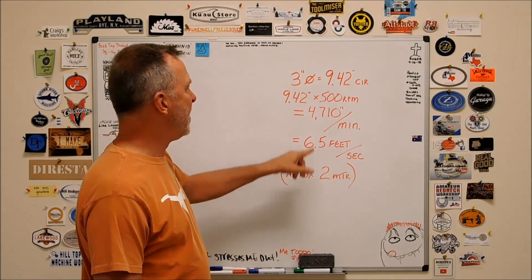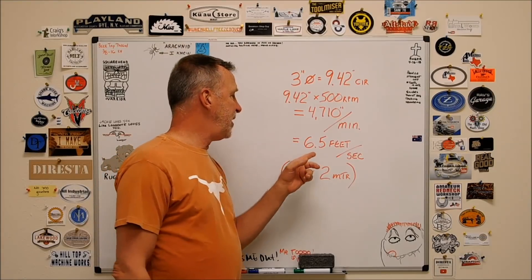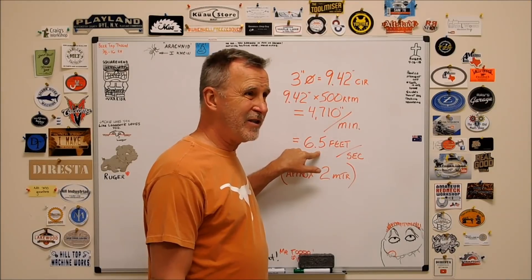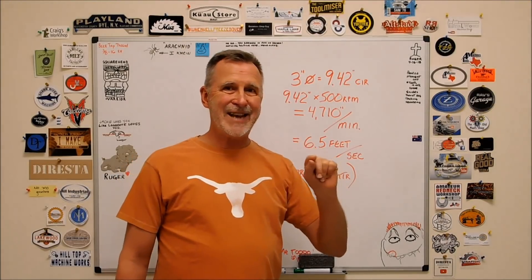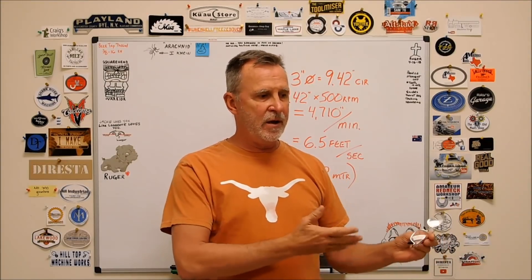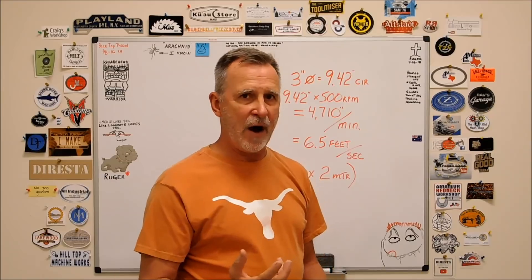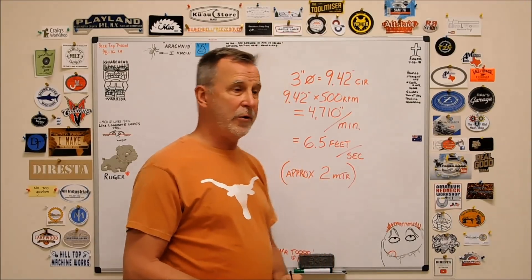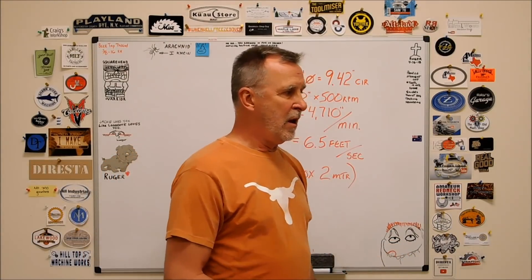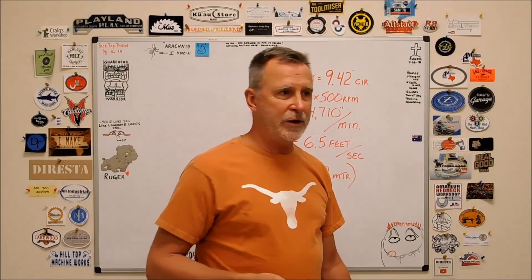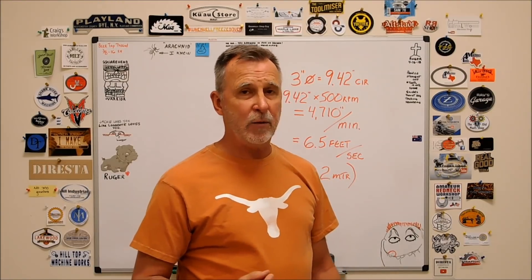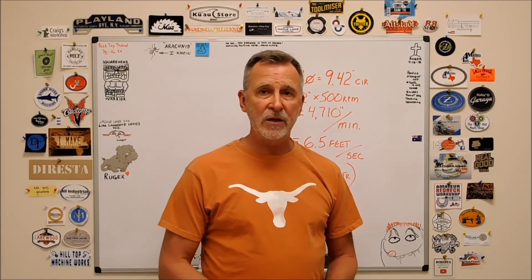Times 500 RPMs, how many times does it deliver that 9.5 inches? 4,710 inches of material every minute, every 60 seconds. Break it down even further: 4,710 inches translates to 6.5 feet, or about 79 inches every second. So effectively, as soon as you've touched that file to that part, you have just exposed that cutting surface to 6 feet worth of material in one spot.